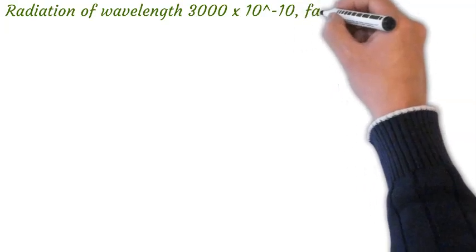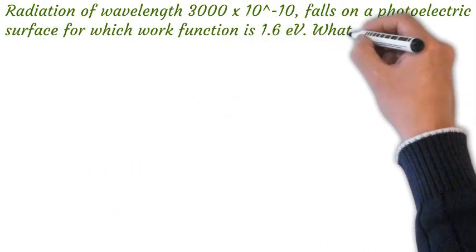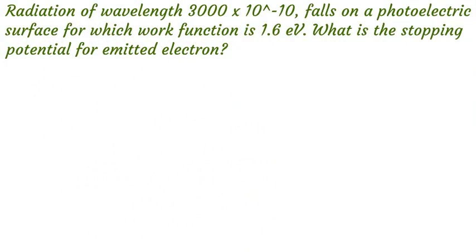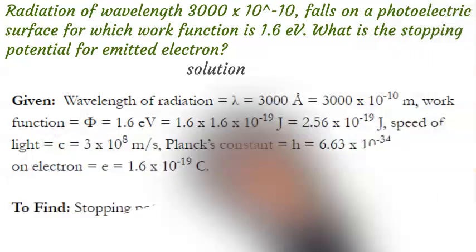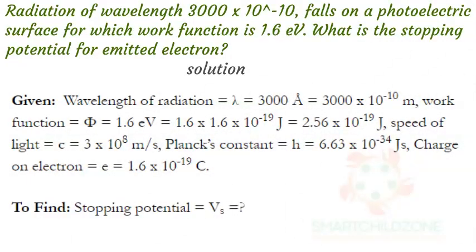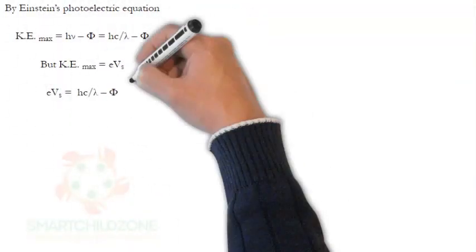Radiation of wavelength 3000 × 10⁻¹⁰ meters falls on a photoelectric surface for which the work function is 1.6 electron volts. What is the stopping potential for the emitted electrons? We are given the wavelength of radiation, work function, speed of light, Planck's constant, and charge on electron. We can use the Einstein photoelectric equation to solve for the stopping potential.